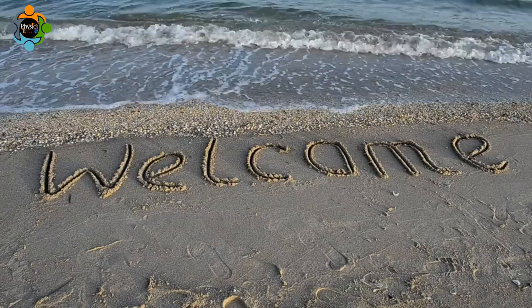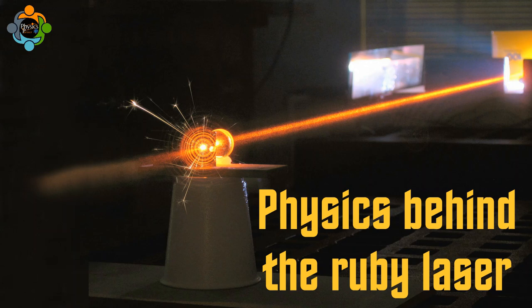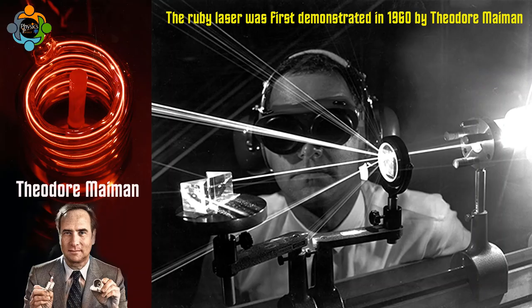Hello and welcome back to another episode of Physics Partner. Today we are diving into the physics behind the ruby laser. The ruby laser was first demonstrated in 1960 by Theodore Maimon, making it the first laser to operate successfully.